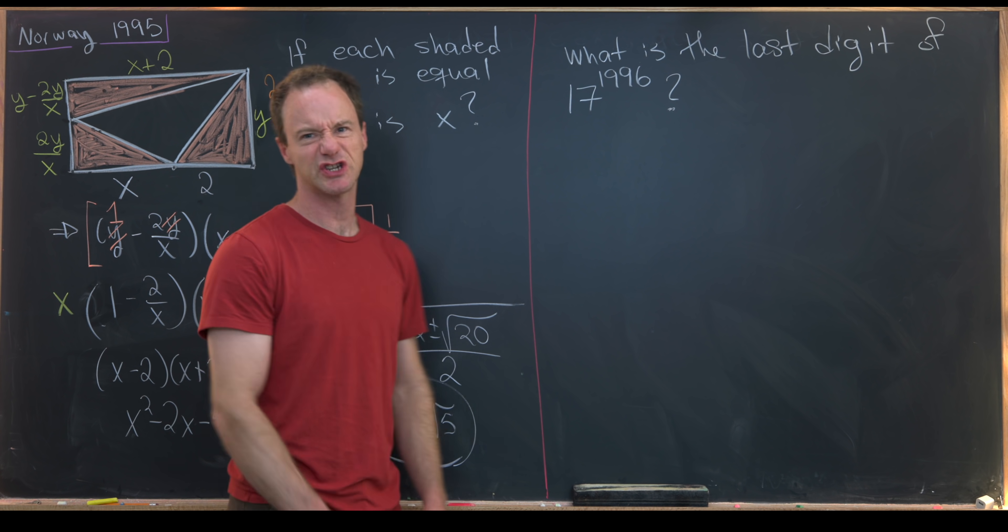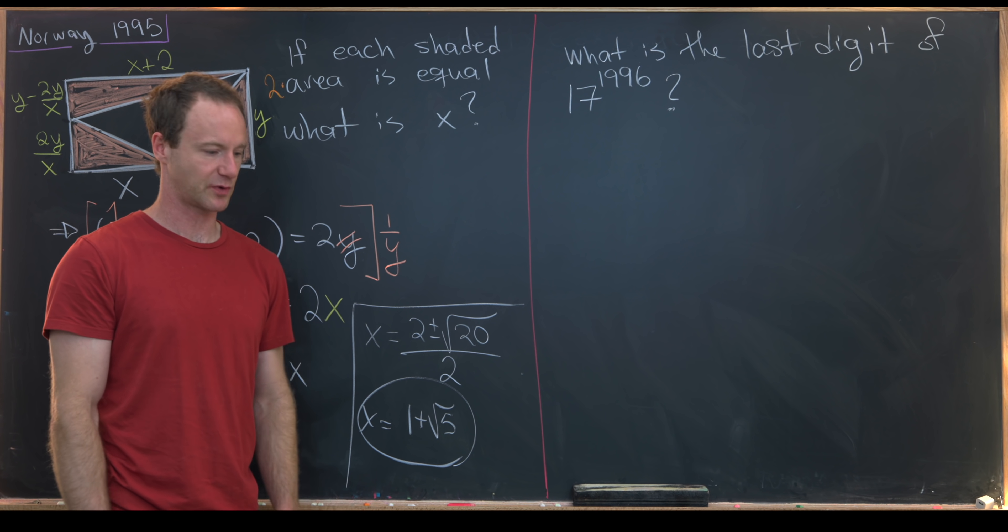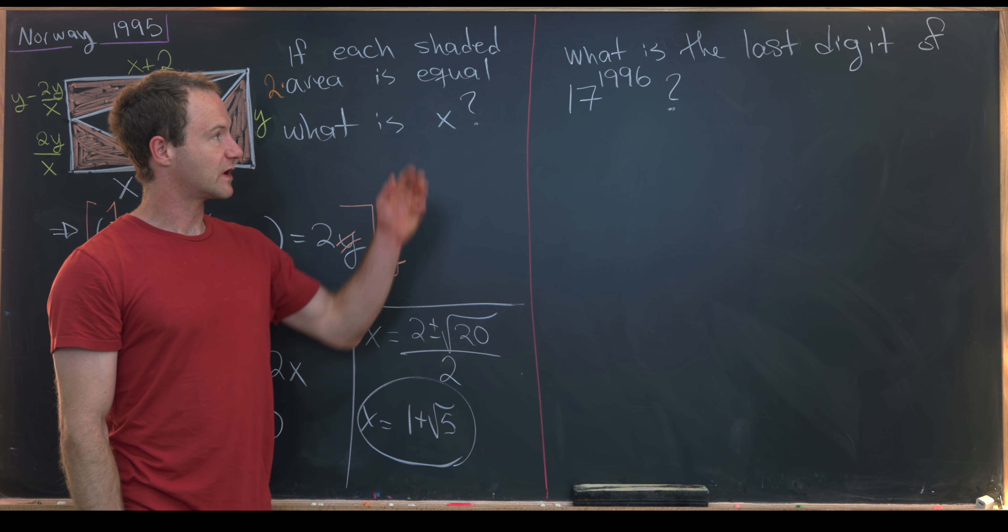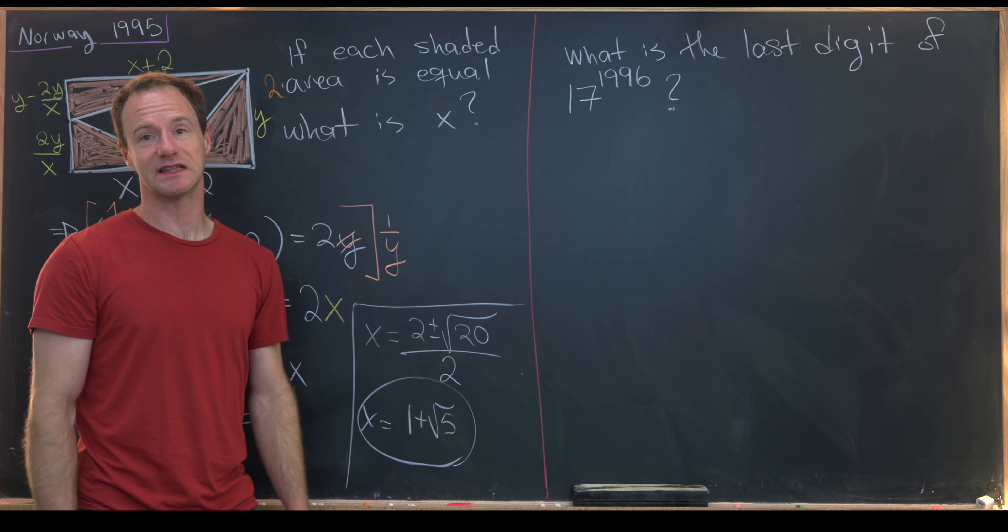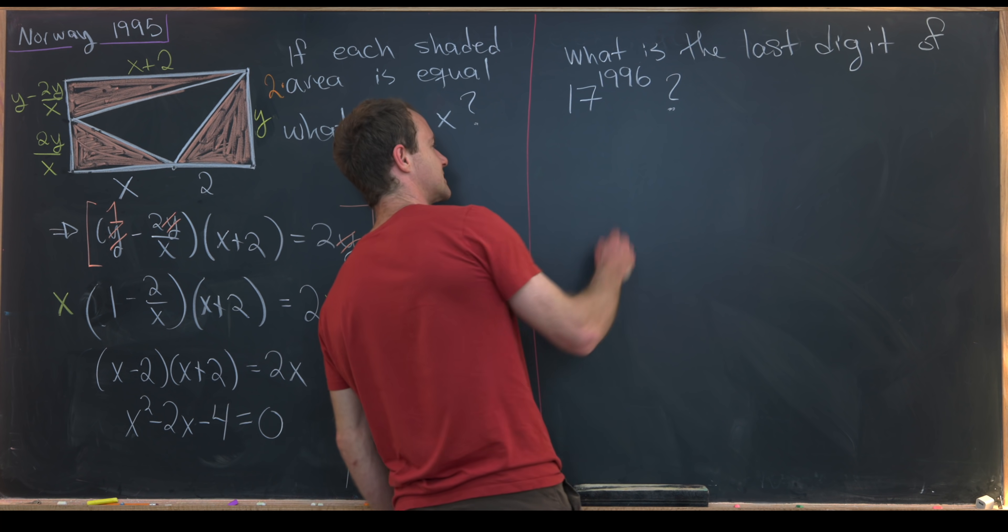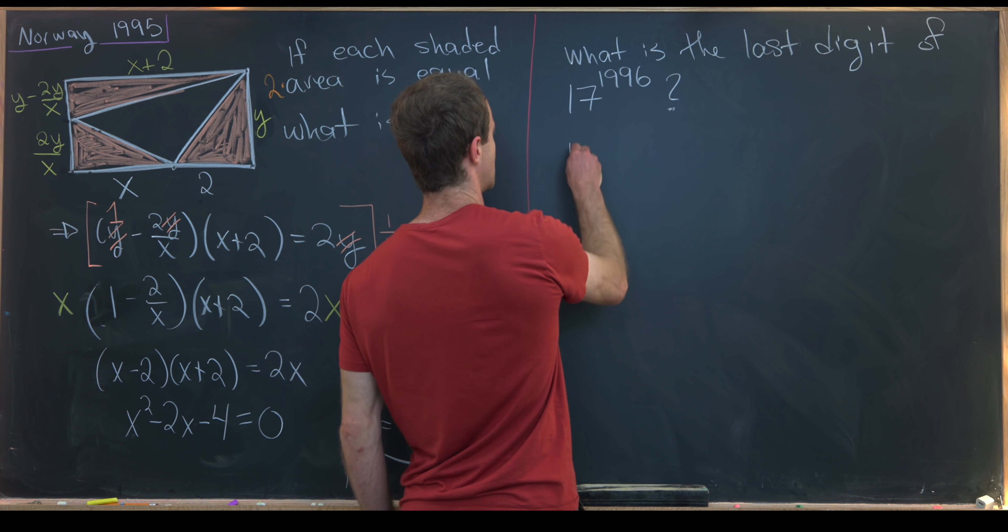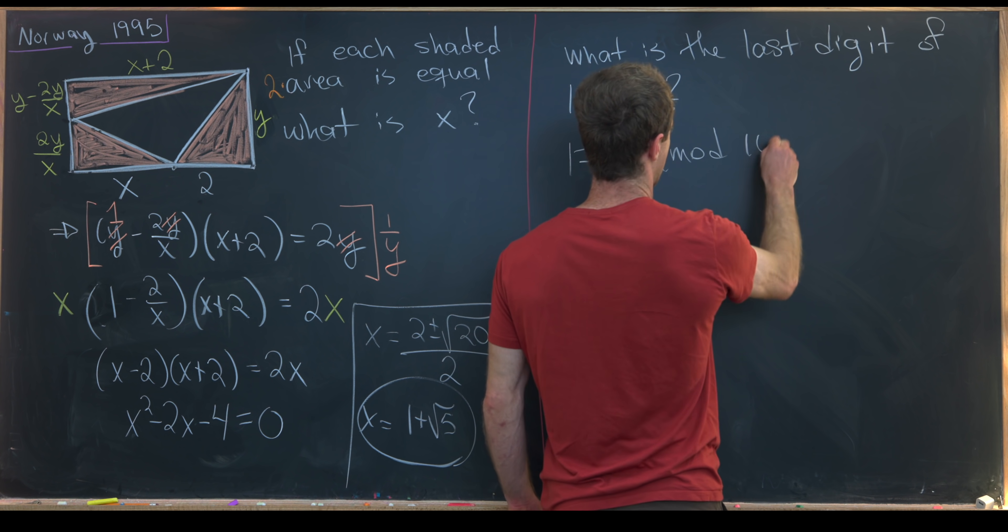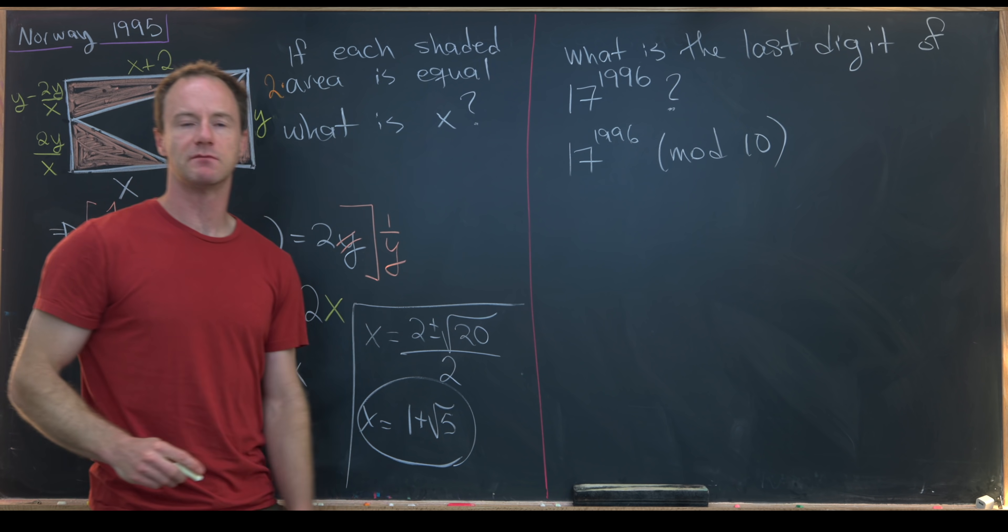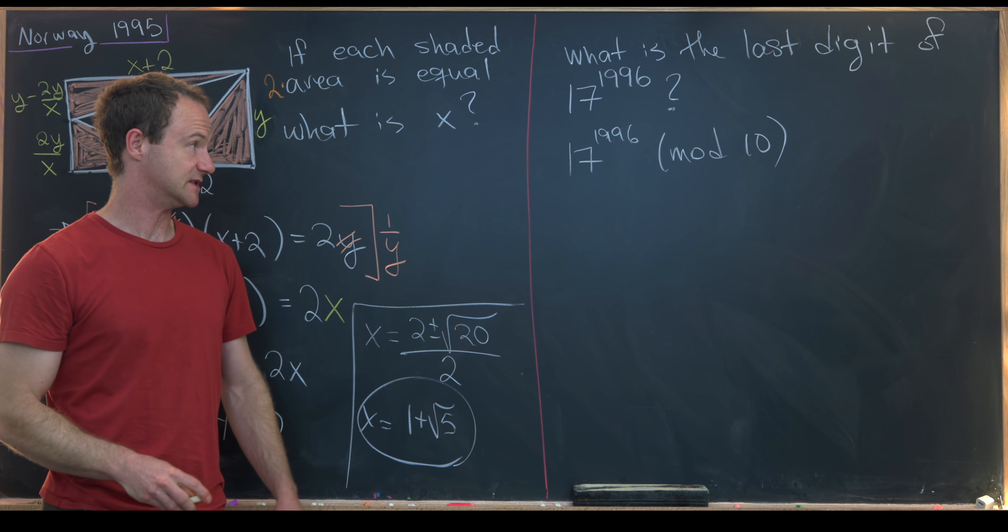Okay, so now let's look at our next problem, which is a nice little number theory trick problem. We want to find the last digit of 17 to the 1996. Put in other words, we want to calculate 17 to the 1996 mod 10. Recall that reducing mod 10 will give us the last digit.